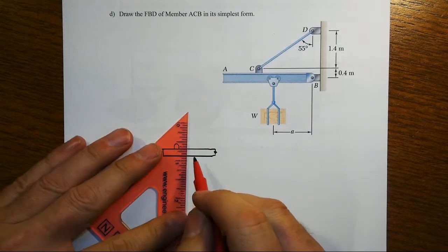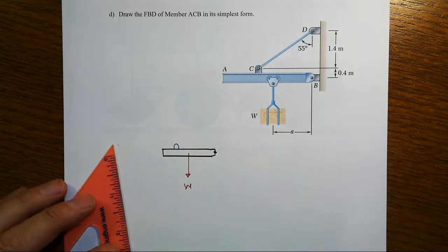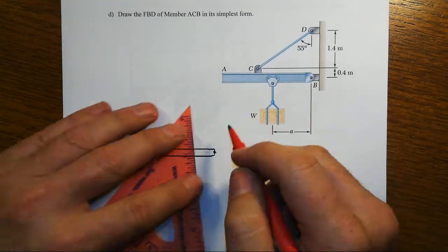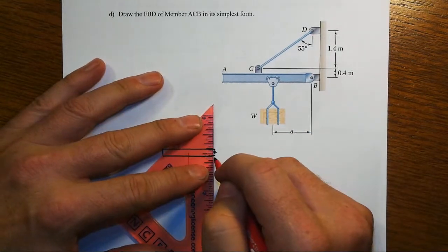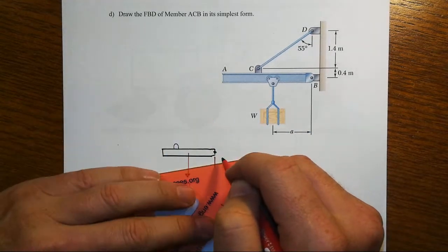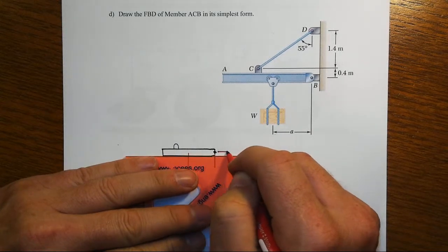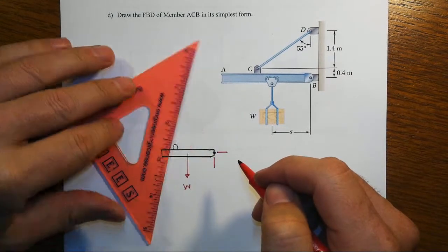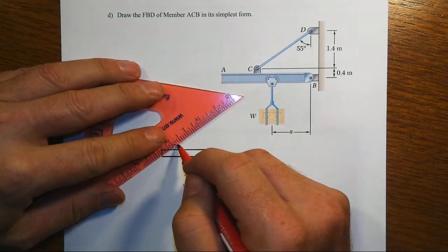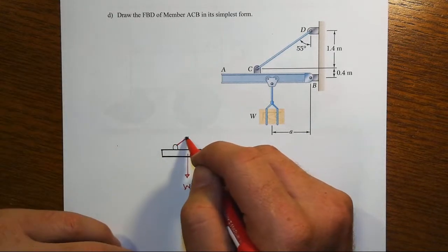So we've got some weight located here, W, some arbitrary distance A away from the support, from the pin. And then we've got a B, or a BX and a BY. Don't know yet what direction those would be. And then we've got the cable right there.